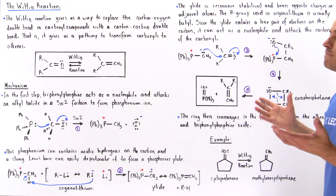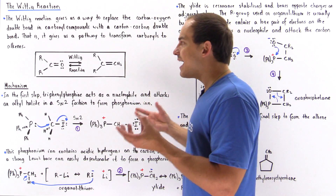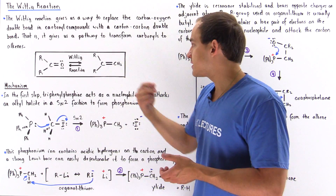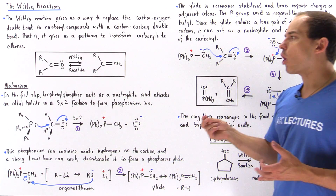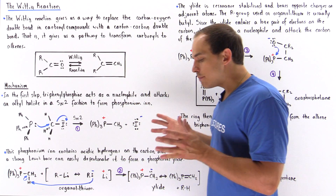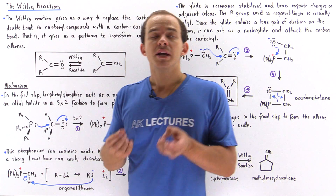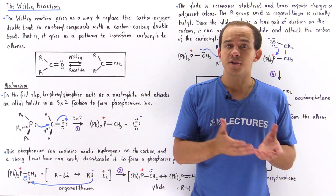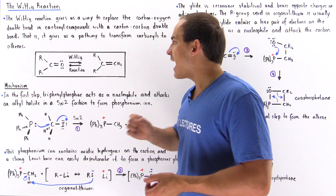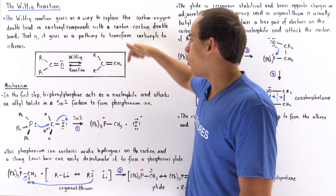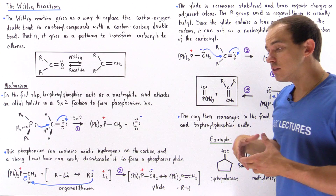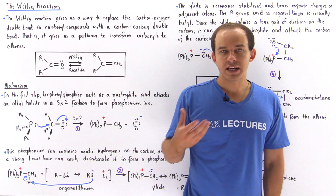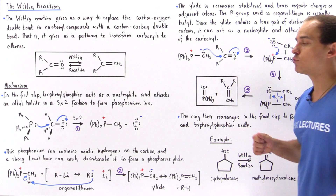What's interesting is the reaction mechanism by which our carbon-oxygen double bond transforms into the carbon-carbon double bond. The first step is to form something called the phosphorus elide, or simply the elide. The phosphorus elide is a nucleophile that reacts with the carbonyl to eventually form the alkene. Let's discuss how we can go about forming this phosphorus elide.